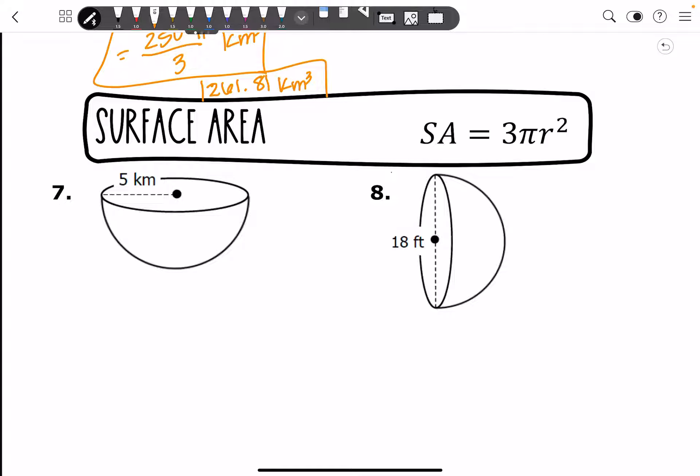Alright, for your surface area, same thing. Drop it on in. 3 pi r squared. So you've got 3 pi times 5 squared. 5 squared is 25. Multiply that by 3. And you're going to get that 75 pi kilometers squared. It's going to be your exact answer.